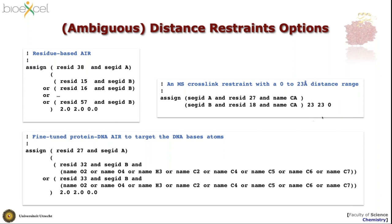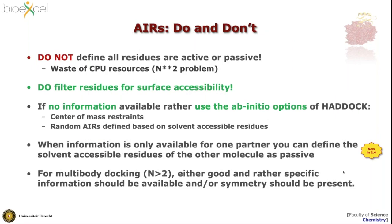On the right is an example of a specific distance restraint between two atoms — for example, how to define a cross-link restraint applied to the C-alpha carbon, specifying the chain segment ID, residue number, and atom name. The distance range would be between 0 and 23 Ångstroms, derived from the chemistry of the cross-linker used. There is a lot of flexibility in how you can define distance restraints in CNS, which is quite unique to the CNS/XPLOR software.